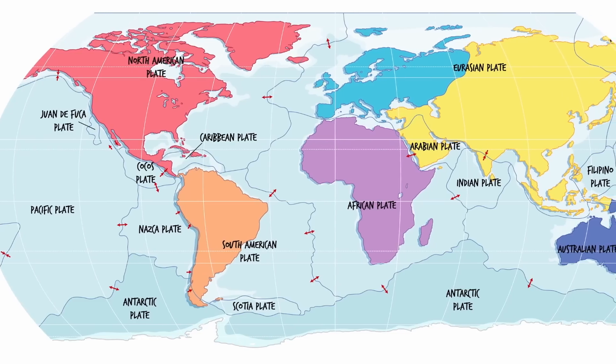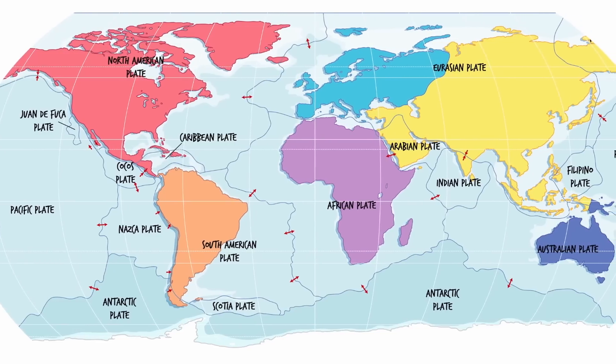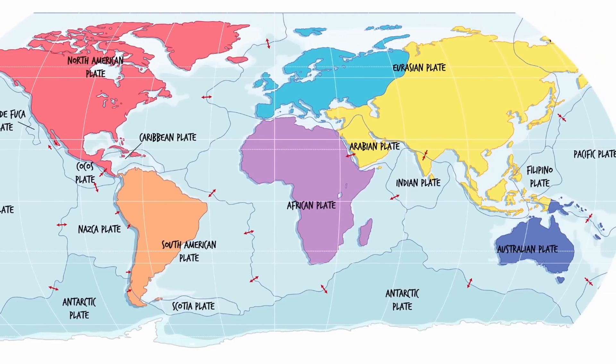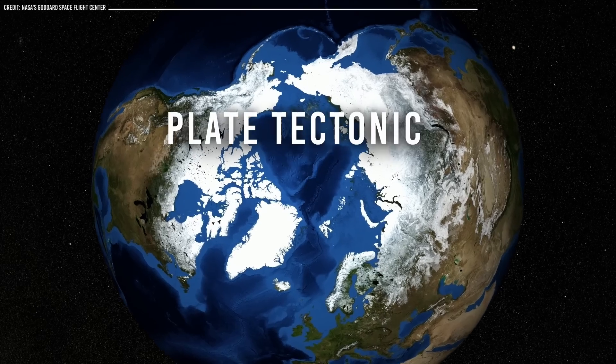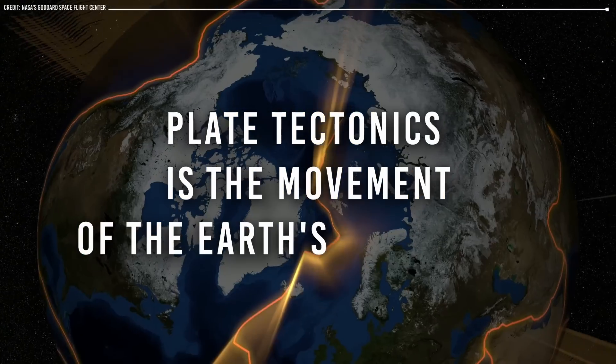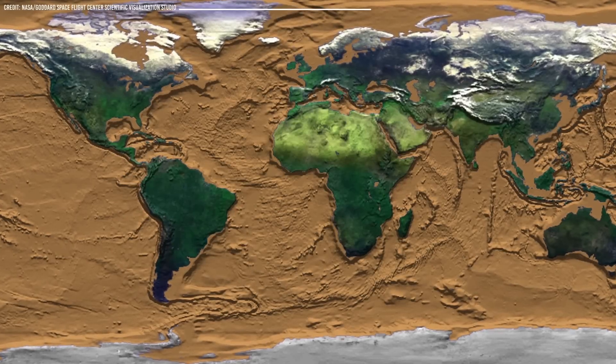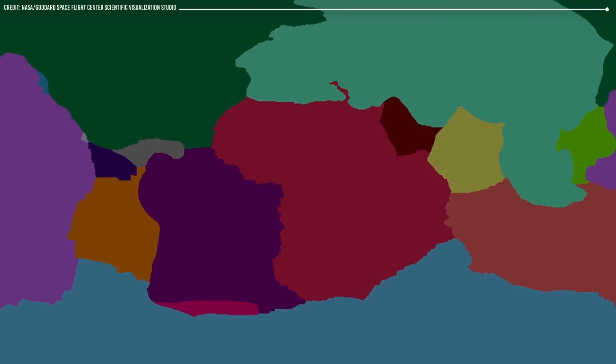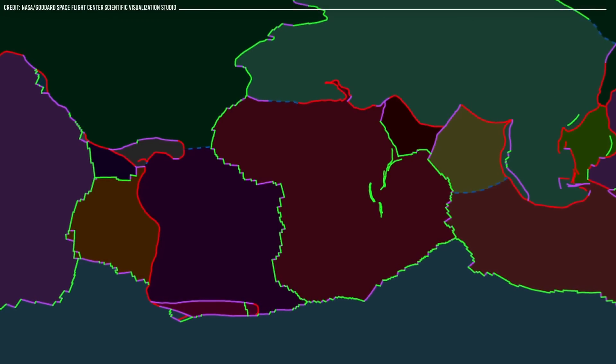Additionally, plate tectonics is another factor that has contributed to Earth's ability to support life and is absent on Venus. Plate tectonics is the movement of the Earth's lithosphere, which is the rigid outermost shell that includes the crust and uppermost part of the mantle, into separate pieces called plates.